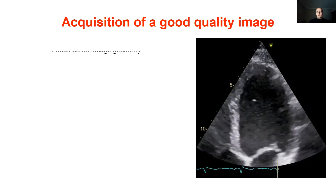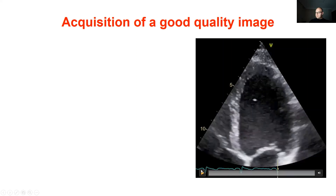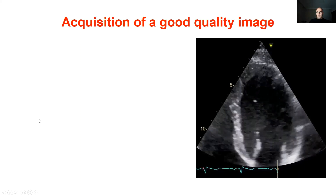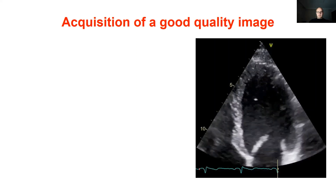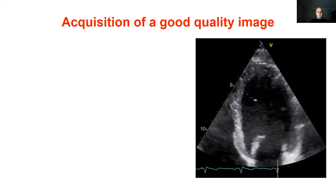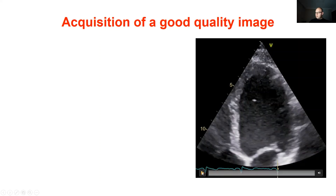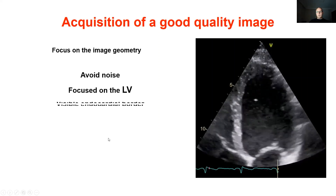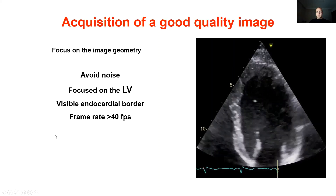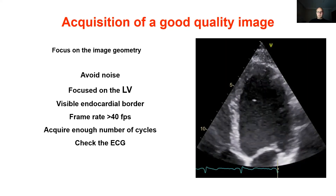For obtaining an image with good quality, focus on image geometry and avoid acquiring foreshortened images. Endocardial strain is more affected by foreshortening than midwall strain, and apical segments are more affected than basal ones. Some softwares are more affected by foreshortening than others. Try to also obtain an image without noise, focused on the left ventricle. Make sure the endocardial border is visible during the heart cycle. Frame rate should be over 40 frames per second. Enough number of cycles should be acquired, and in arrhythmic patients, more than five cycles may be acquired, paying attention to beats with similar RR intervals.